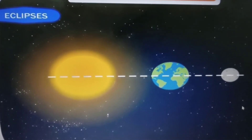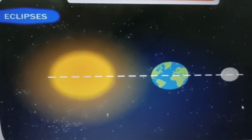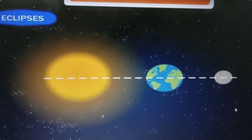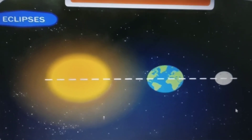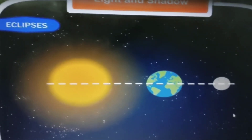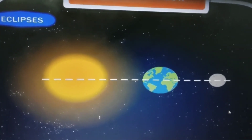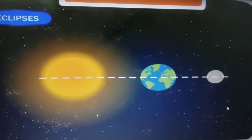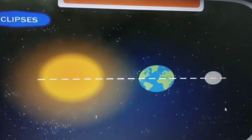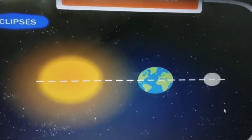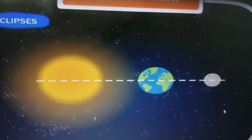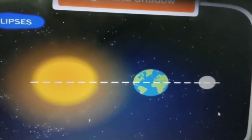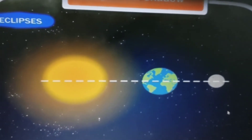Eclipses occur when the sun, earth, and moon come in a straight line. As you know, the earth revolves around the sun and the moon revolves around the earth. When they three come in the same line, eclipses occur. Earth and moon are non-luminous bodies. When earth comes between the moon and sun, it does not allow sunlight to fall on the moon. Similarly, when the moon comes between the sun and earth, it casts its shadow. This is how eclipses occur.